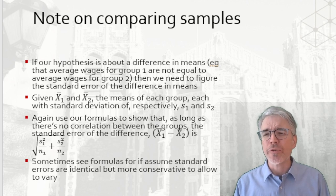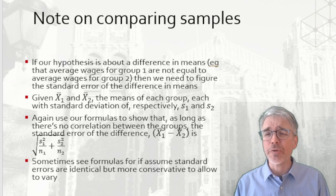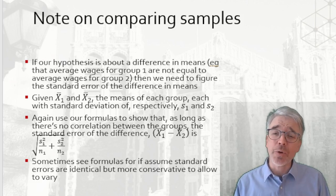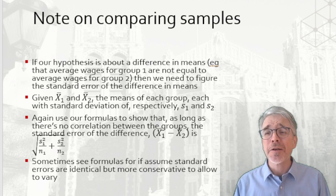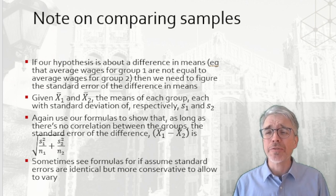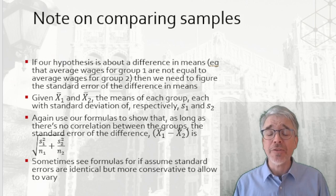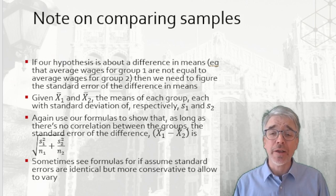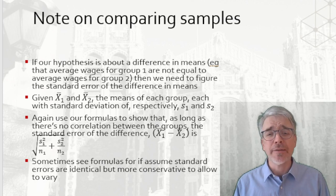Sometimes you see other formulas — in Hogg they go through some of those. If we're willing to assume the standard errors are equal, you could use a different formula. But then that raises the question, why would I think the means are different but the standard errors are identical? That's a strange or difficult assumption. Generally it's more conservative to estimate each different standard error, then the tests are going to be a little more conservative, trading off between type 1 and type 2 error.